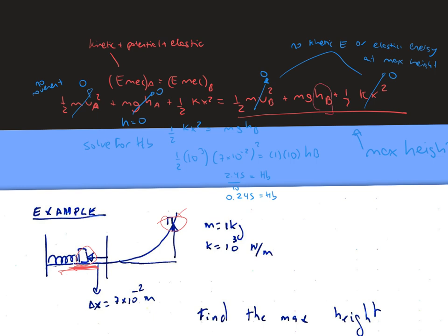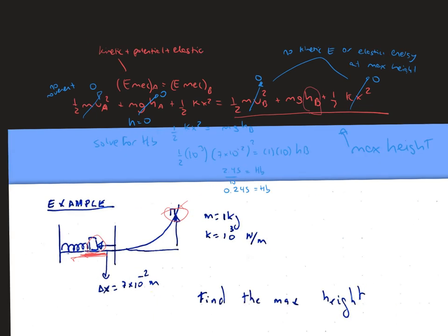And that's going to be one-half k x² on the left side equals m g h_B. Next, one-half times 10³